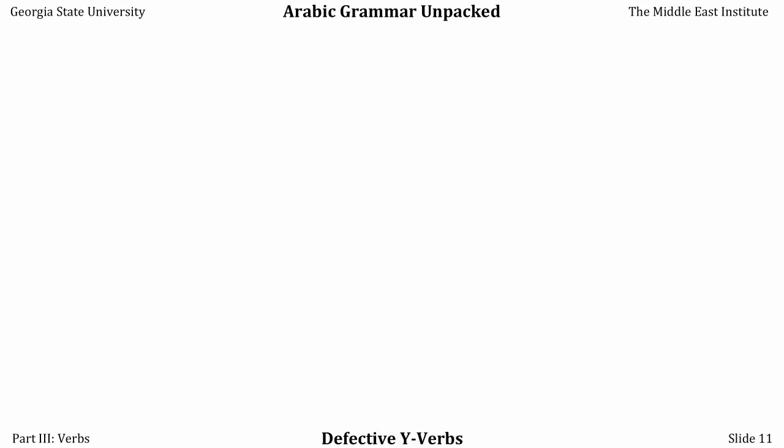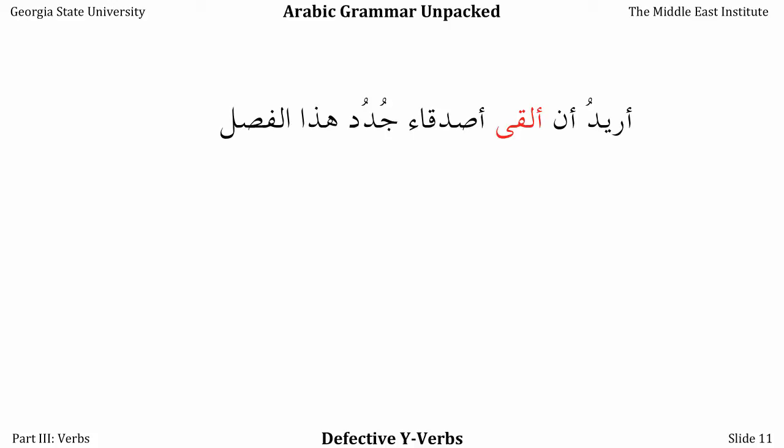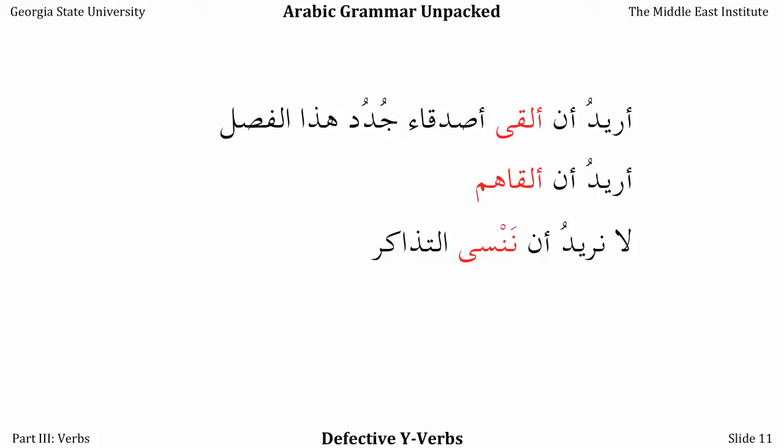We can use these in sentences: ureed an alqa asdiqa' judud hadha al-fasl — I want to meet new friends this semester. But remember, alif maqsura can only be the last letter in a word. So if we attach a pronoun suffix to this verb, we have to turn it back into regular alif. Ureed an alqahum — the pronunciation stays the same but the spelling changes. Same thing with 'to forget': la nureed an nansa al-tadhaakir — we don't want to forget the tickets. But if we replace 'the tickets' with the pronoun suffix -ha, since the non-human plural is feminine singular, we change the alif maqsura back to a regular alif.